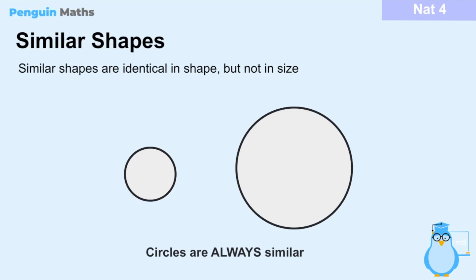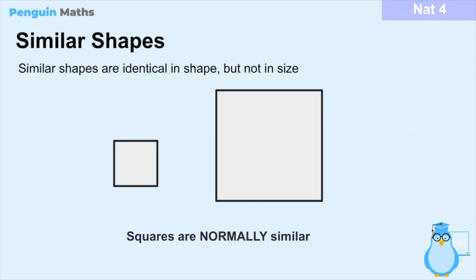Here we have two circles — the original on the left and a bigger one on the right. Circles are always similar regardless, because they are always going to be identical in shape. There's no way to change the orientation or ratio of a circle, as it has no corners and has a constant radius all the way around. So anytime we see two circles, regardless of size, they are always described as similar.